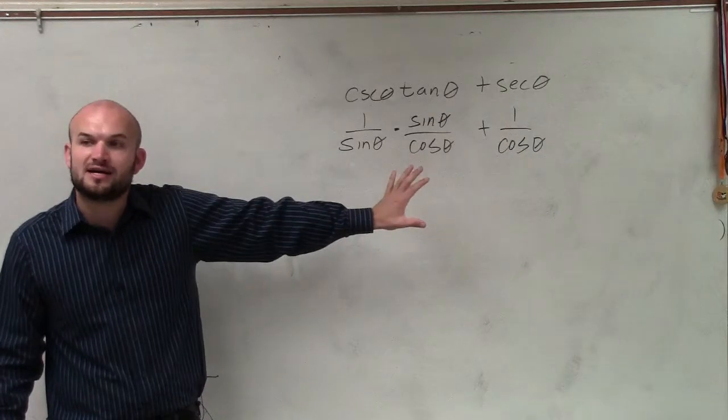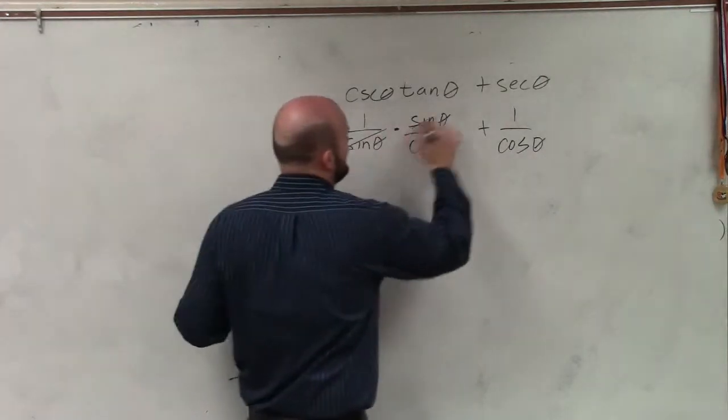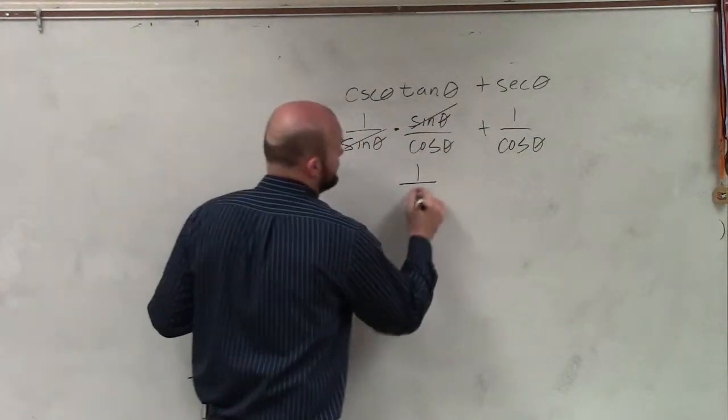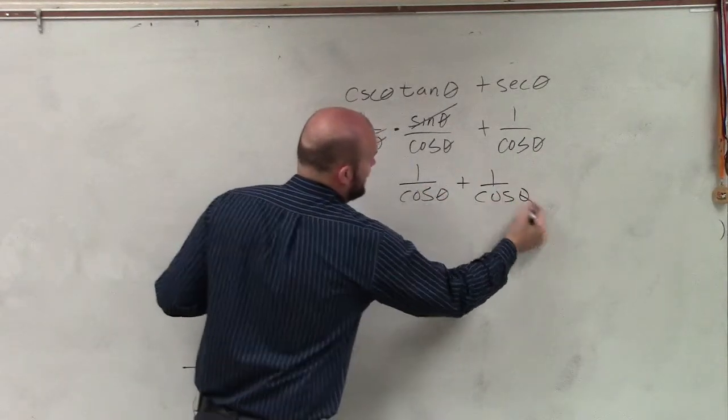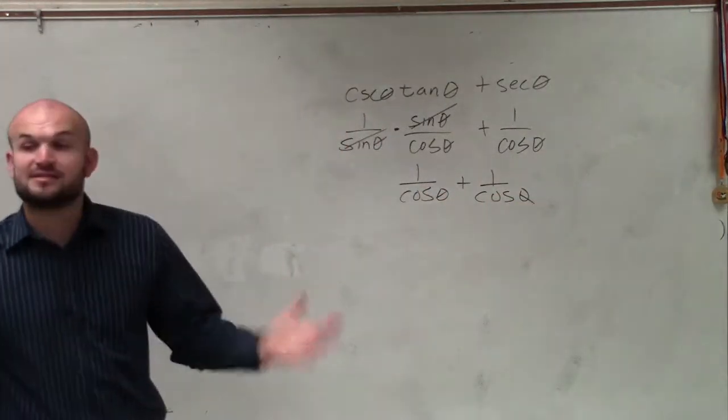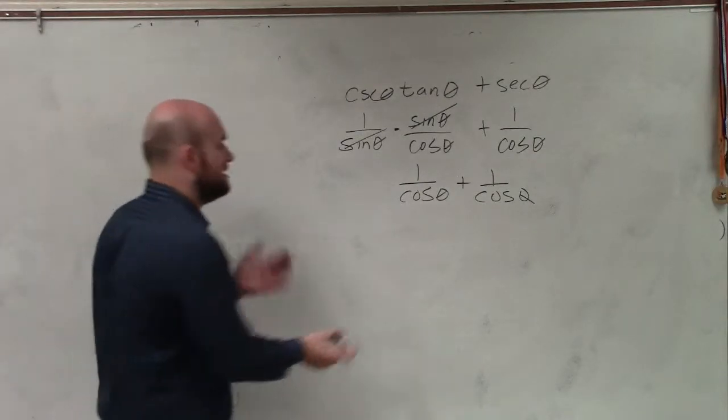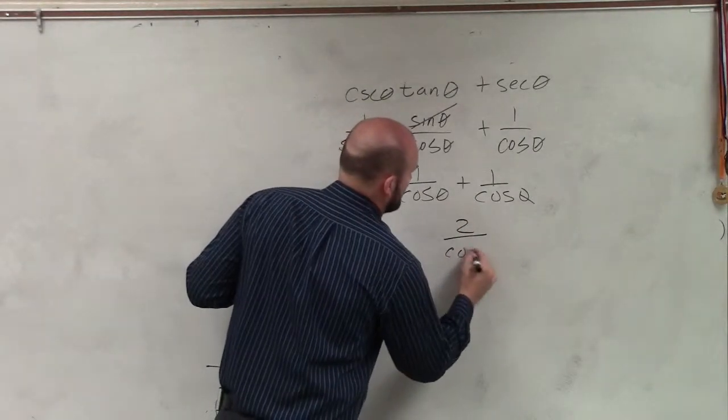as I go ahead and multiply these across, you can see that these divide out, and I'm left with 1 over cosine of theta plus 1 over cosine of theta. Well, obviously, these are fractions with the same denominator. So we can combine them to 2 over cosine of theta.